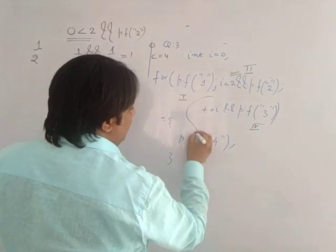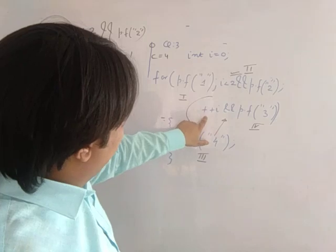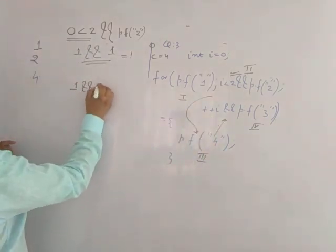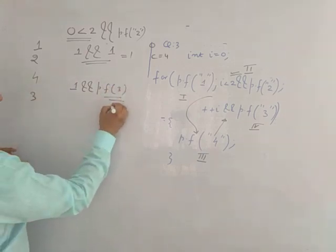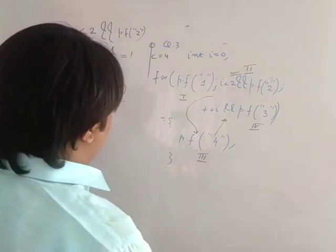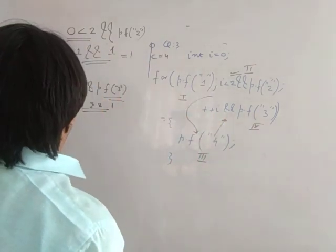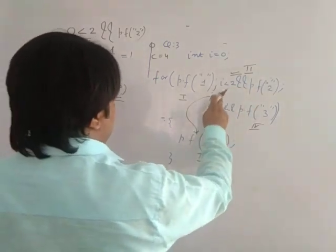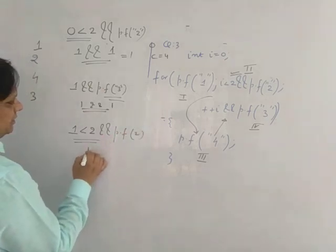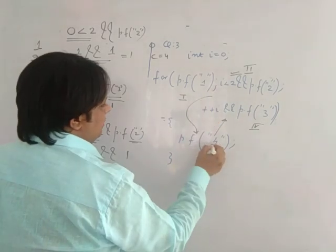printf 2 returns the number of characters which is 1, so 1 AND 1 — condition is true. You go down and print 4. Then you move up; the value of i is incremented via ++i so i becomes 1. Then 1 AND printf 3 — it prints 3 and returns 1. Condition is true so it prints again. So far the output is 1, 2, 4, 3. Then the loop checks again: i is still 1, 1 less than 2 — condition true, prints 2, then 4.